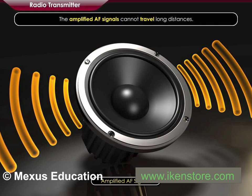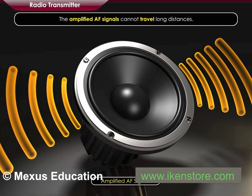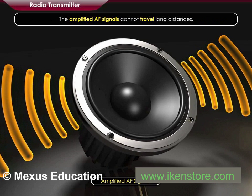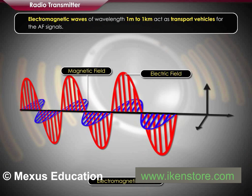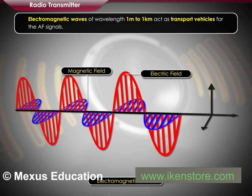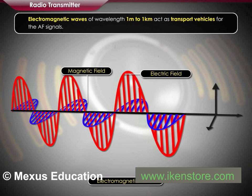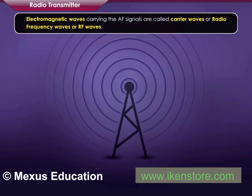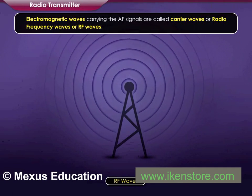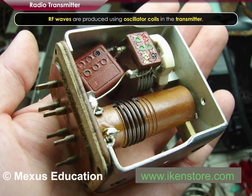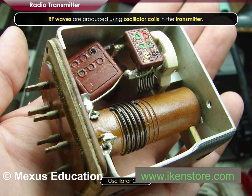The amplified AF signals cannot travel long distances. Electromagnetic waves of wavelength 1 meter to 1 kilometer act as transport vehicles for the AF signals. Electromagnetic waves carrying the AF signals are called carrier waves, or radio frequency waves, or RF waves. RF waves are produced using oscillator coils in the transmitter.